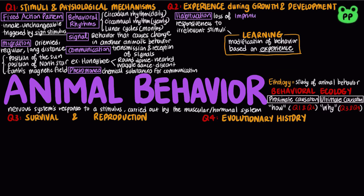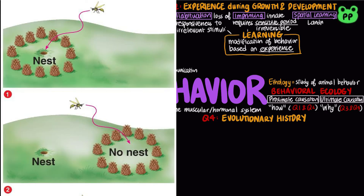Imprinting is a behavior that includes a specific critical period of learning, known as the sensitive period, and innate components that is generally irreversible. A sensitive period is a limited developmental phase that is the only time when certain behaviors can be learned. An example of imprinting is young geese following their mother. Spatial learning is a more complex modification of behavior based on experience with the spatial structure of the environment. Some animals use landmarks to find locations, whereas others construct a cognitive map — an internal representation of spatial relationships between objects in an animal's surroundings.